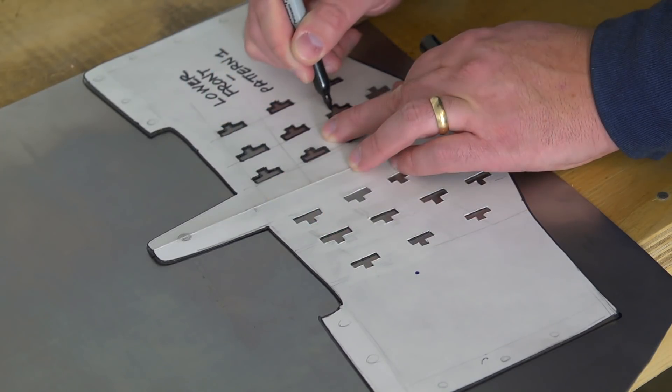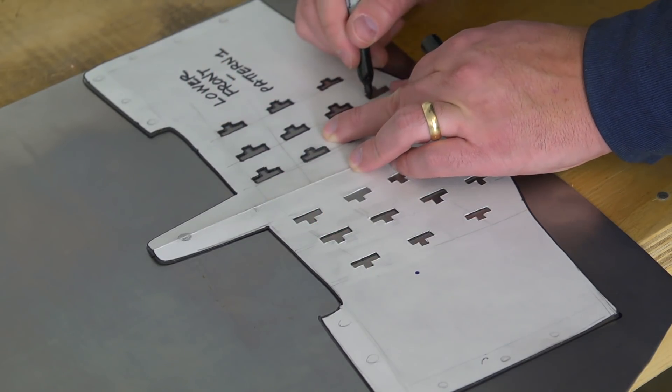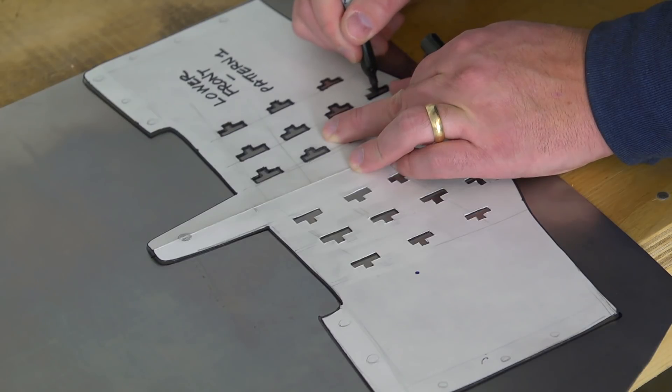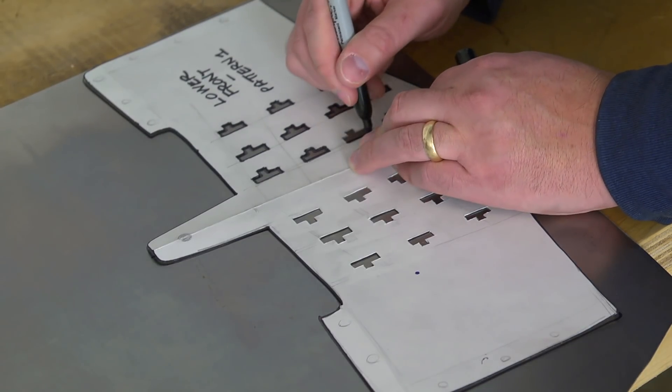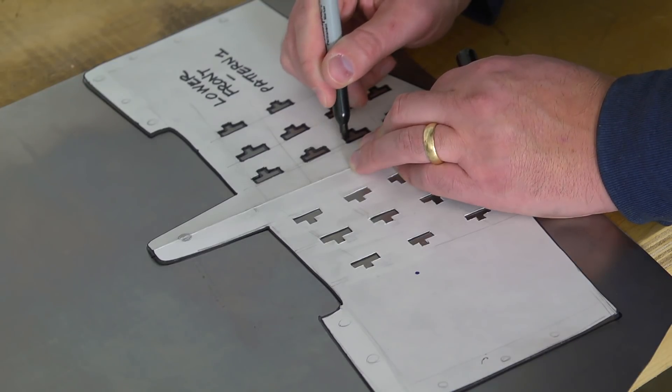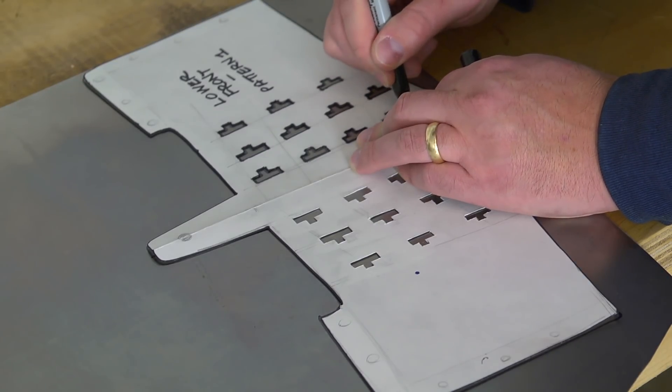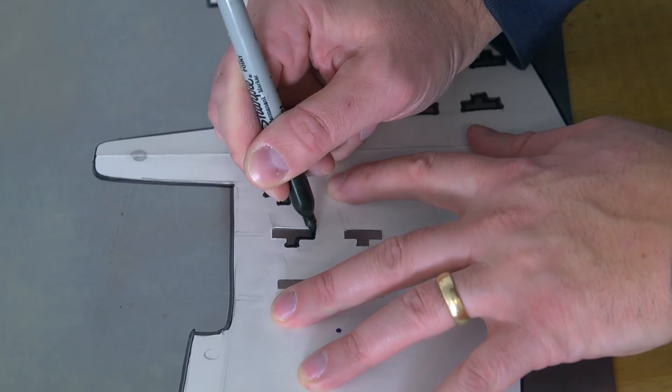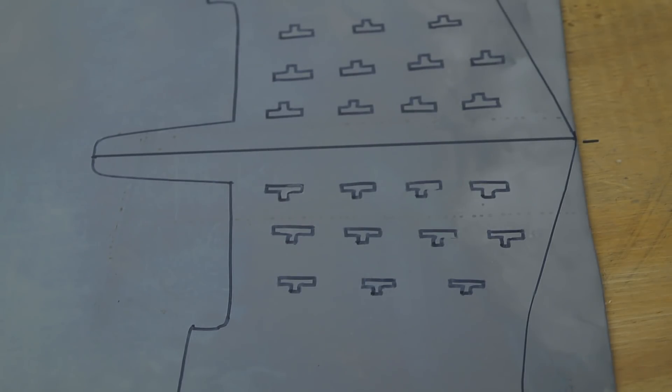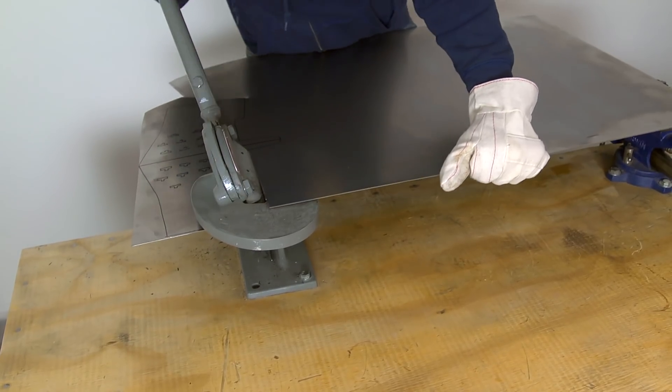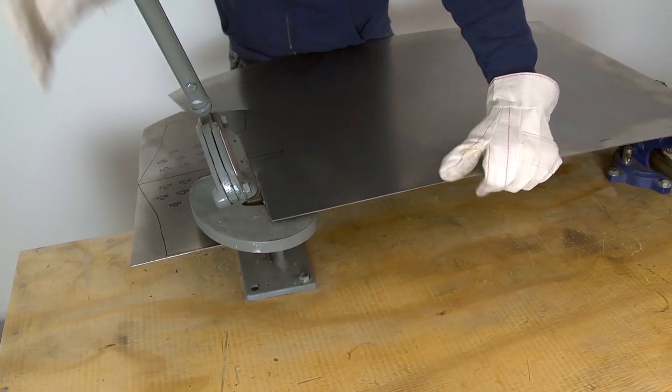So we're going to take the pattern, place it on the metal trying to conserve as much metal as possible. We don't want to be wasteful. Then we're going to trace the pattern with the Sharpie and then we'll need to cut them out. There's quite a few different ways to cut out the patterns, the shapes. For example, you could use like a scroll saw.